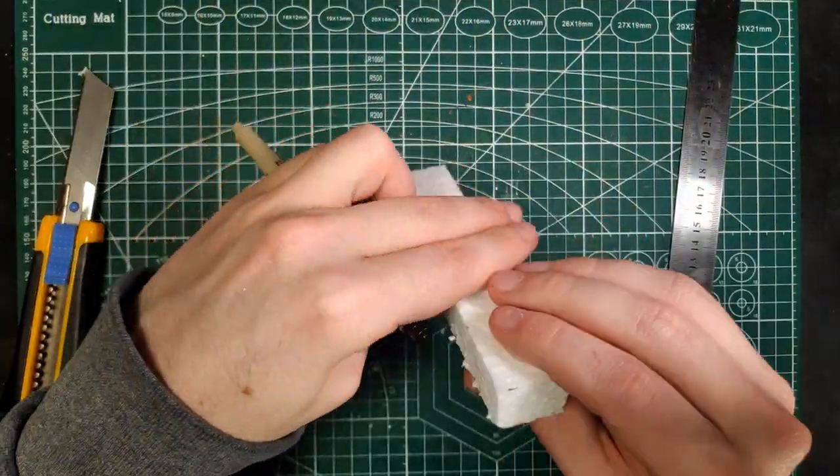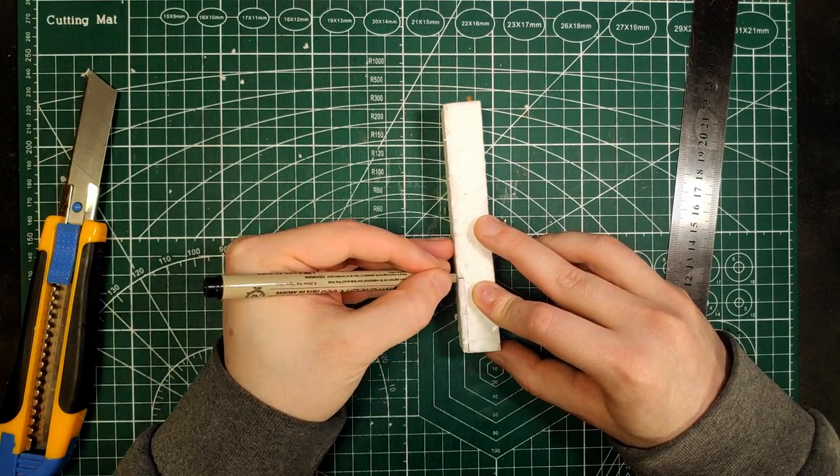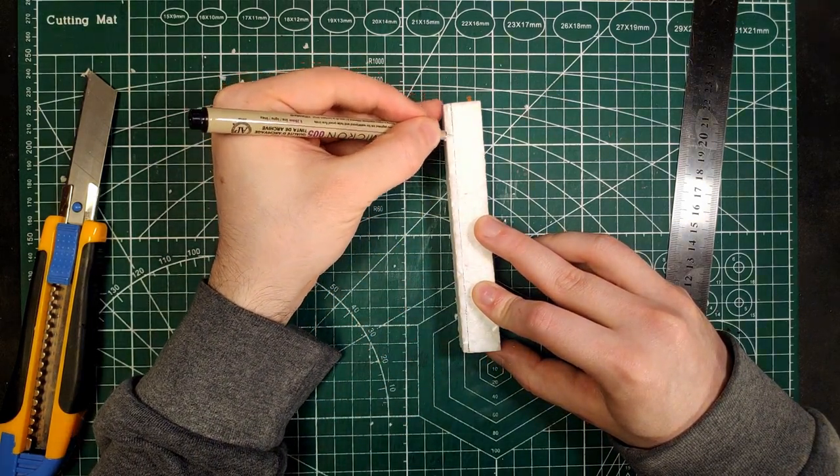For the roof, take a few pieces of foam as long as the mausoleum, and cut them diagonally, gluing them on top of each other.